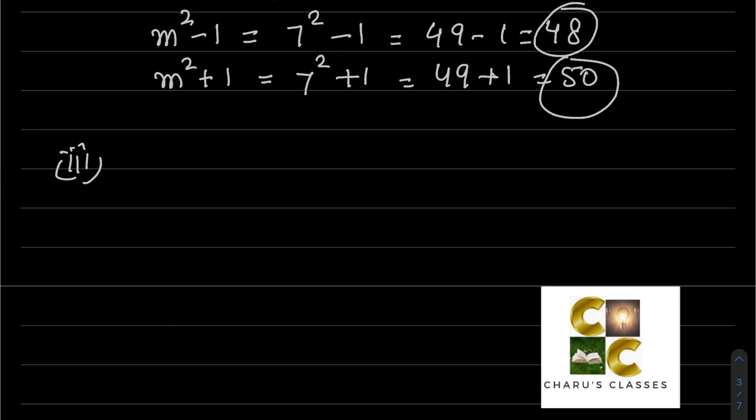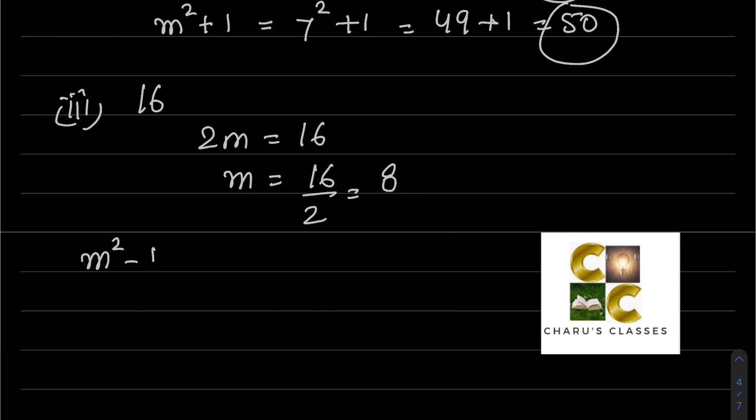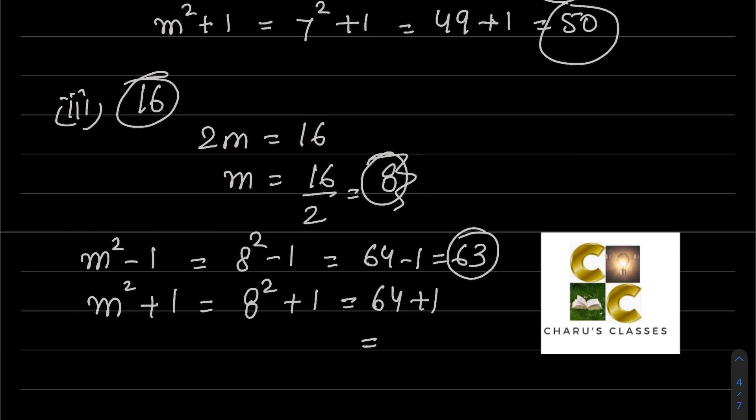Third part: The Pythagorean triplet given is 16. So 2m equals 16, meaning m equals 16 by 2, that is 8. m squared minus 1, that is 8 squared minus 1. 8 into 8 is 64, minus 1 - one answer is 63. 16 is already a triplet given. The last one: m squared plus 1, 8 squared plus 1. 8 into 8 is 64, plus 1. The next triplet is 65. So the answer is 16, 63, and 65. This is our third answer.